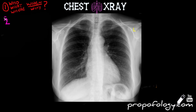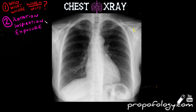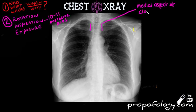Next you should look at the aspects that affect the quality of any given chest x-ray. Check the rotation — are the medial ends of the clavicles equidistant from the spinous processes? Check inspiration — is it adequately inspired, and are 10 to 11 posterior ribs seen in each lung field? And how is it exposed — is it too bright, too dark, and can you see everything that you need to see?